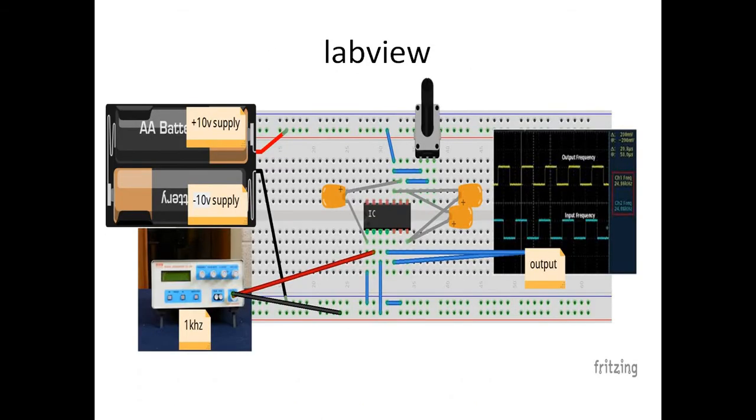Here is the Breadboard view of the Phase Locked Loop. There is a Plus or Minus 10V DC Power Supply, a Signal Generator, an Output waveform using DSO, IC565, a Potentiometer, Capacitors, and connecting wires.